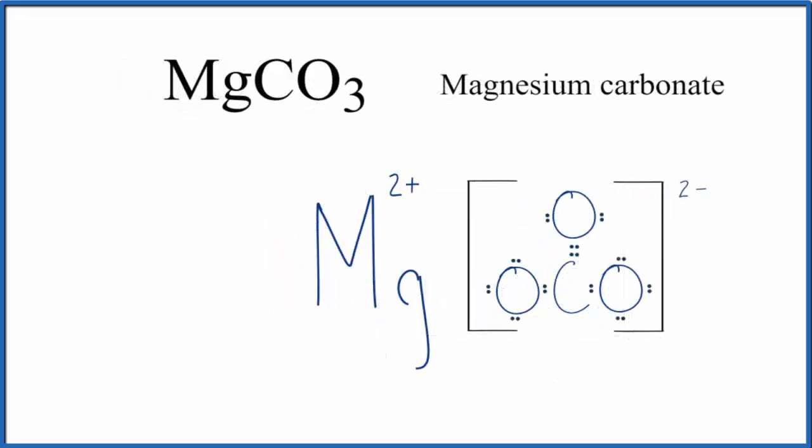We could also write the Lewis structure like this here. You can see we have our double bond here, just like there's a double bond here, and we have our Mg2+, like we have right here.